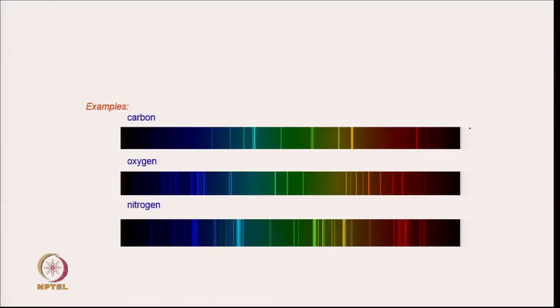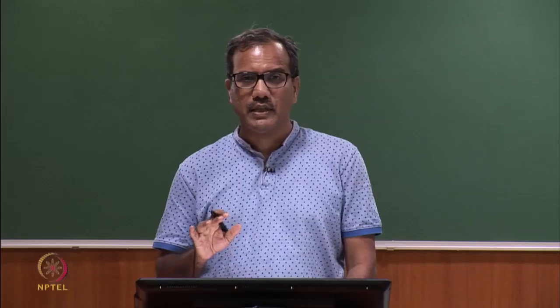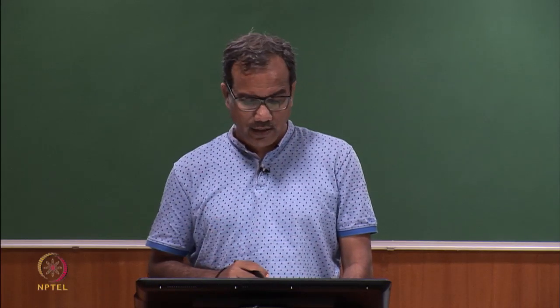Here are some other examples of atomic spectra — this is the atomic spectra of carbon, this is the atomic spectra of oxygen, and this is the atomic spectra of nitrogen. Each element has its characteristic atomic spectra, hence it is very easy to distinguish between different atoms using atomic spectroscopy.